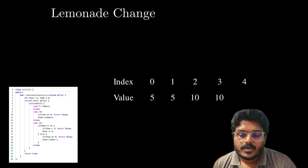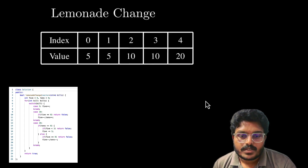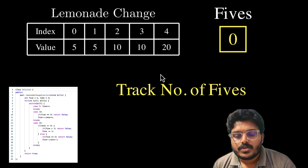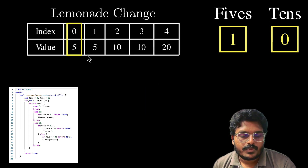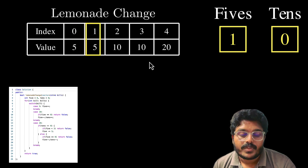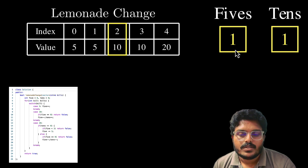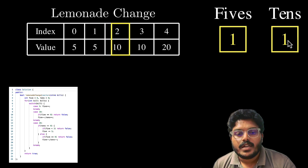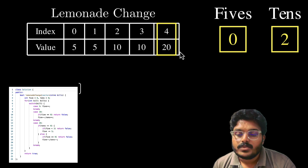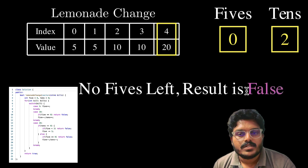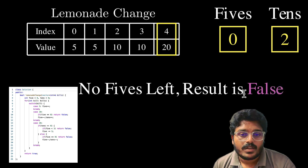Now the second case: 5, 5, 10, 10, 20. We track fives and tens starting at zero. First bill $5 — fives becomes 1. Second $5 — fives becomes 2. Third is $10 — decrement fives to 1, increment tens to 1. Fourth is $10 — decrement fives to 0, increment tens to 2. Fifth is $20 — there are no fives left to return as change, so the result is false. This is how the algorithm works.